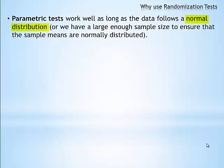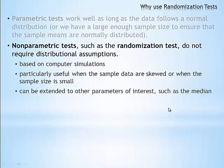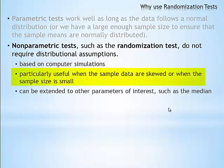In this study, there are only five observations in each group. We cannot be confident that the sample means are normally distributed. Since we cannot be confident that the sample means are normally distributed, we will use a distribution-free test, also called a nonparametric test. Such tests do not require the distribution of our sample statistic to have any specific form. Instead, they are based on computer simulations. They are particularly useful when the sample data are skewed or when the sample sizes are small — in other words, when the parametric tests don't work well.